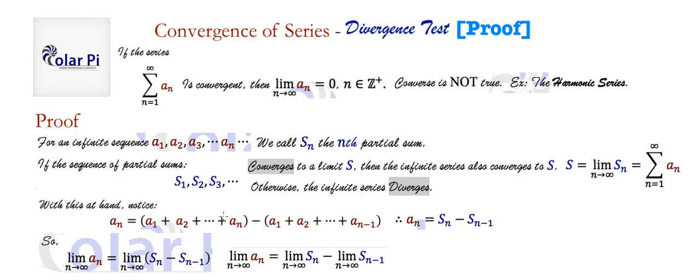But wait, if the sequence of partial sums converges to the finite number s, this is equal to s, and this is equal to s. So we have the limit as n goes to infinity of a_n is equal to s minus s, or zero as required.